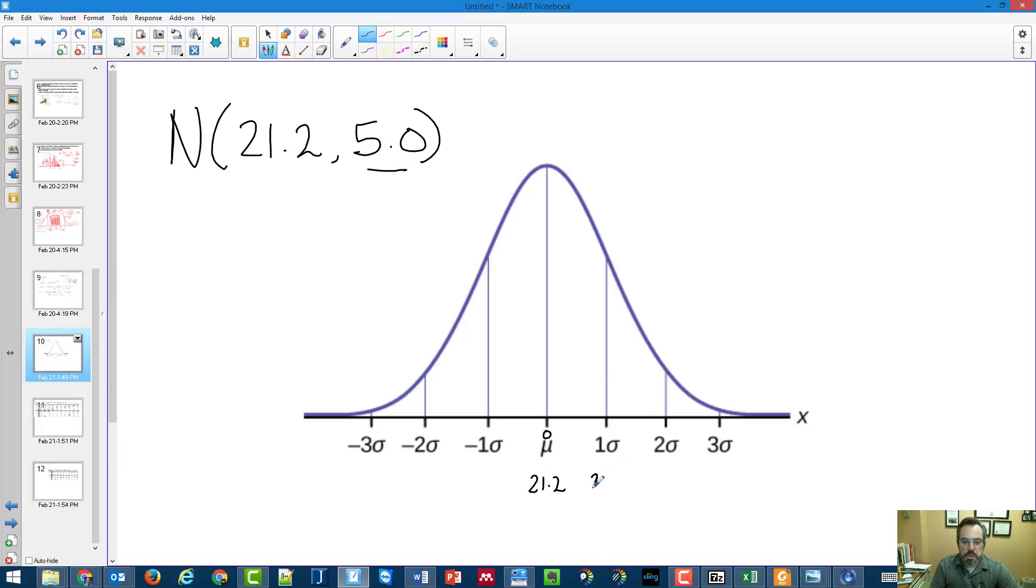So I know this is 26.2. That's a z-score of one. A z-score of two would just be adding another five. A z-score of three, adding a five again, 36.2. And I can do the same thing going the other direction, subtracting five each time.